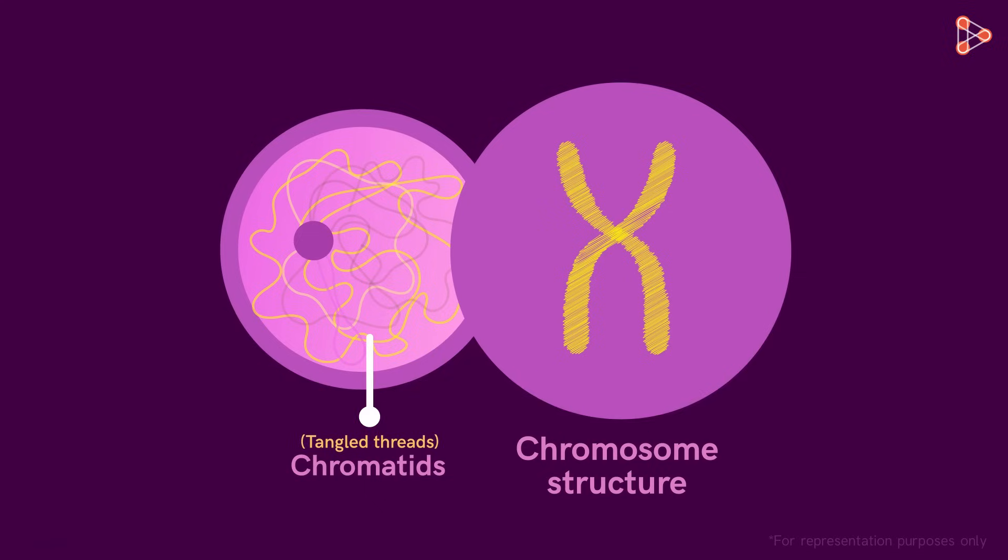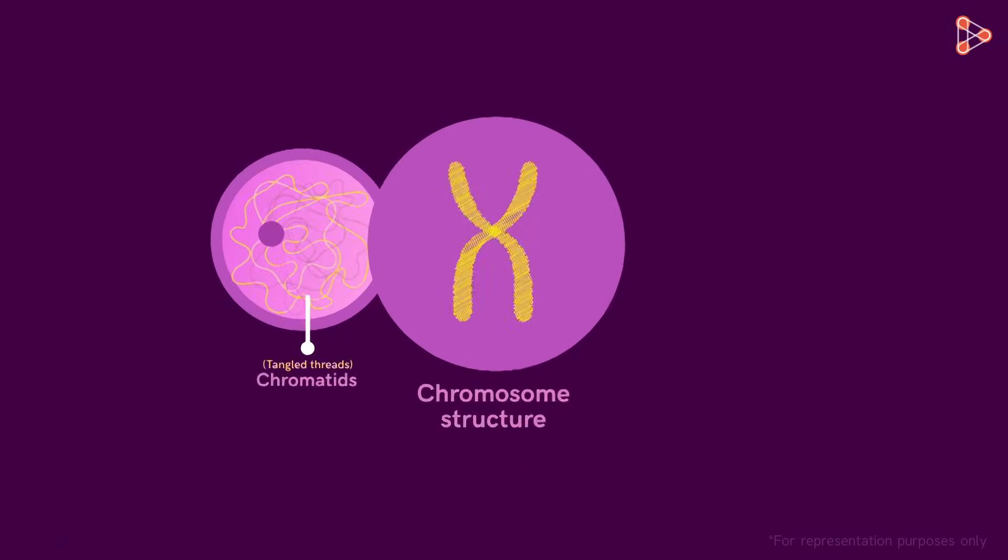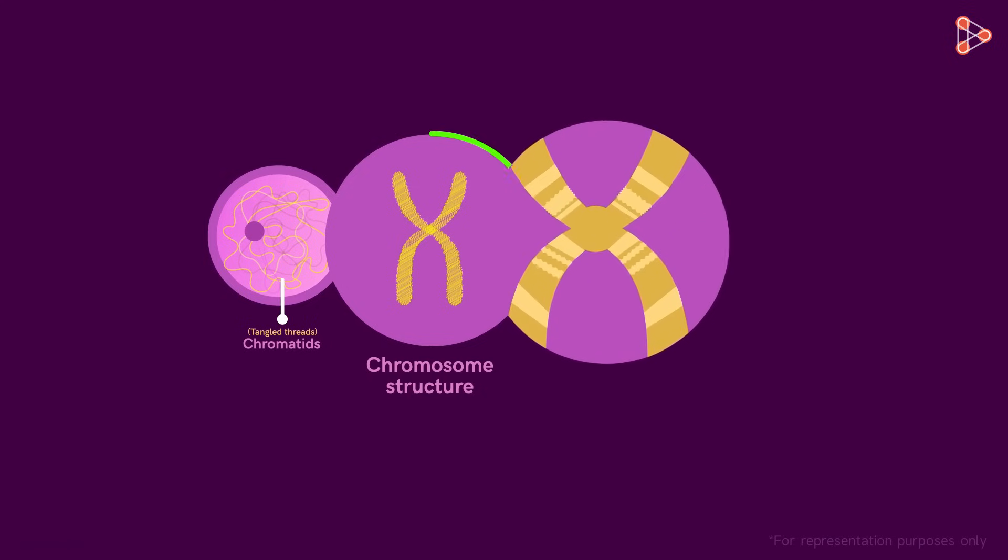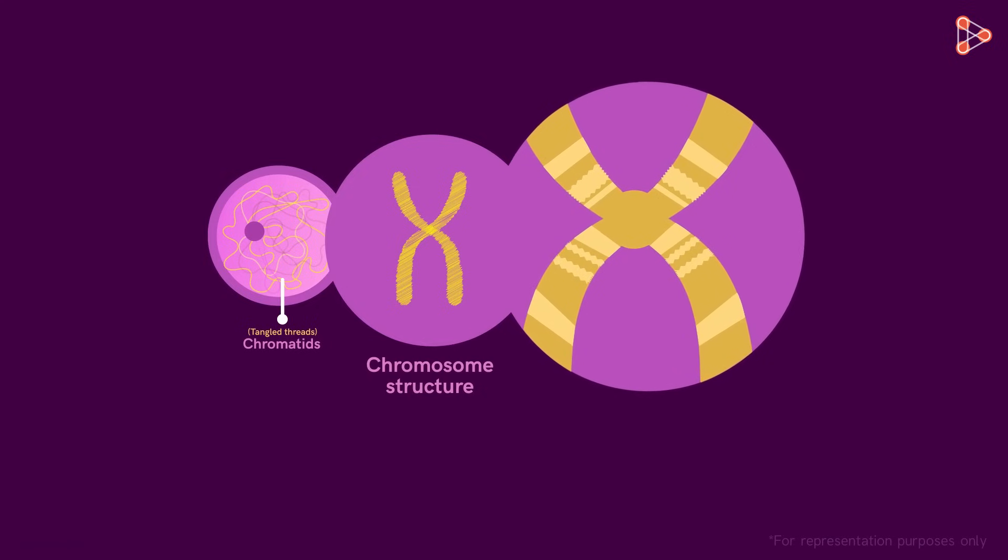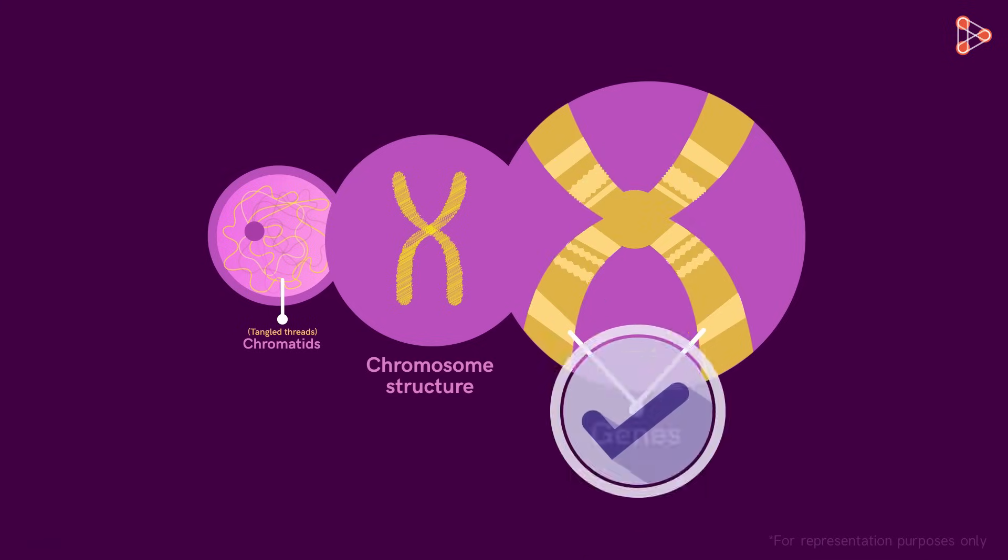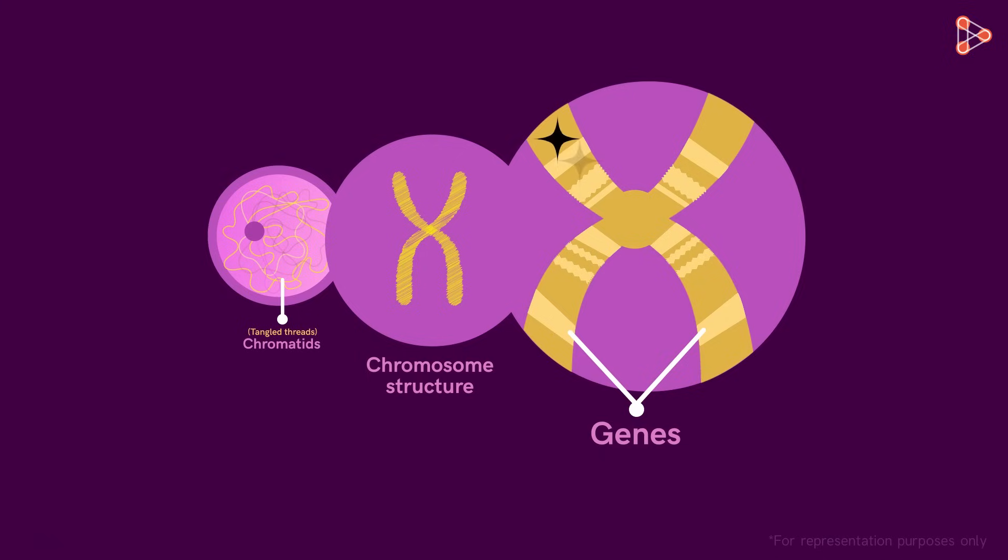Now the next question is, what are these threads, or chromosomes to be precise, made up of? If we zoom into the structure of this chromosome, we find small segments like these that make up the complete structure. These functional segments are nothing but genes. So can we say that chromosomes are made up of genes? Absolutely! All these segments make up the whole structure.